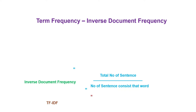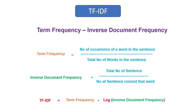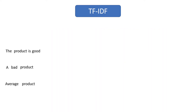So first we have to calculate term frequency, then we need to calculate inverse document frequency, and finally to get the TF-IDF score we multiply term frequency with log of inverse document frequency. Now let's look at an example. Let's say we have three sentences and we have to convert them into three vectors using TF-IDF.